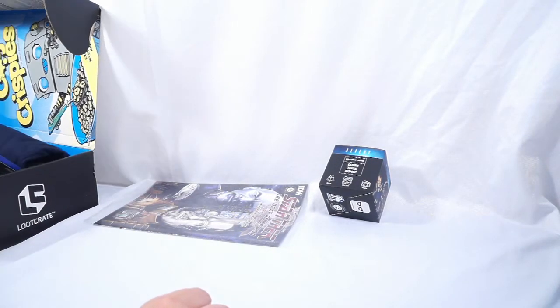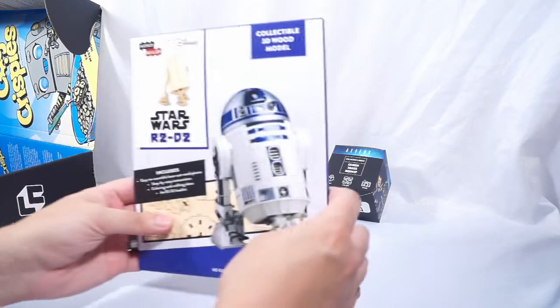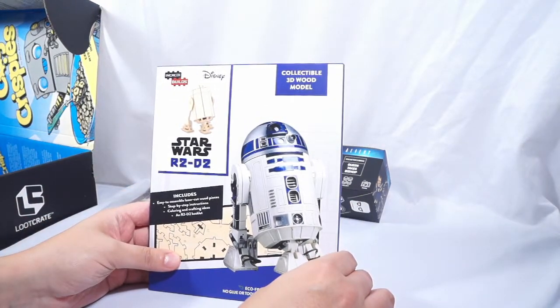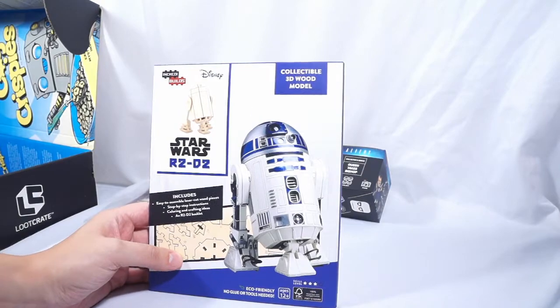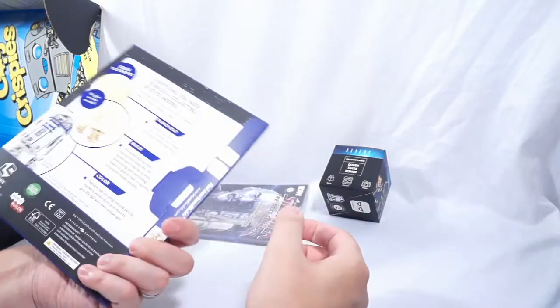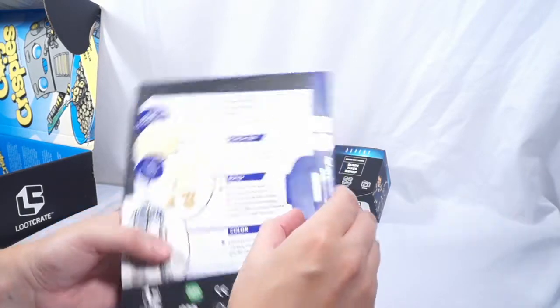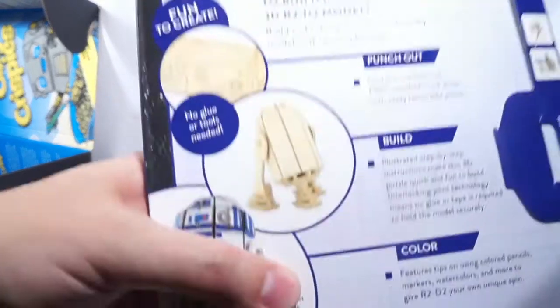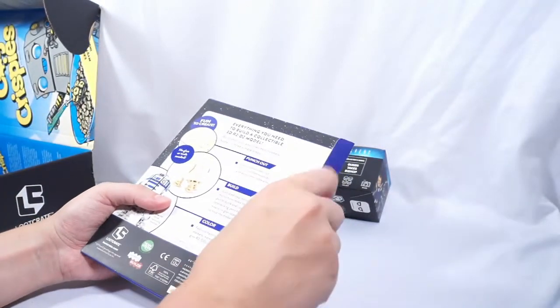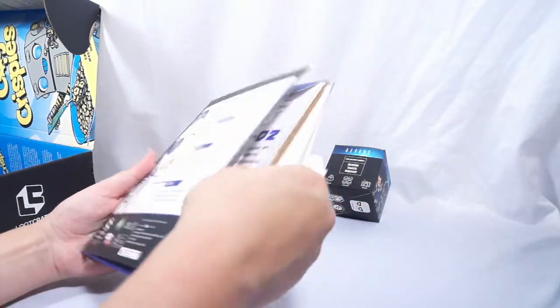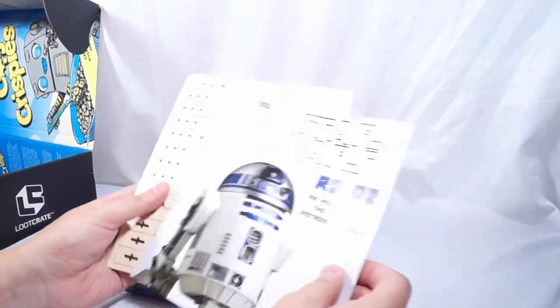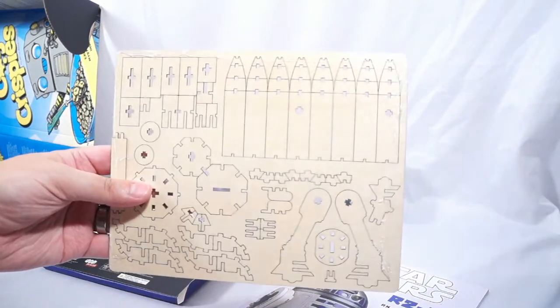Alright, see this is the thing that they were actually advertising on their website. A collectible 3D wooden model kit. Look at this thing. This is insane. God, look at all the pieces you're supposed to get. And a little R2 when you're done. Wow. Okay, that is just a little bit of awesome.